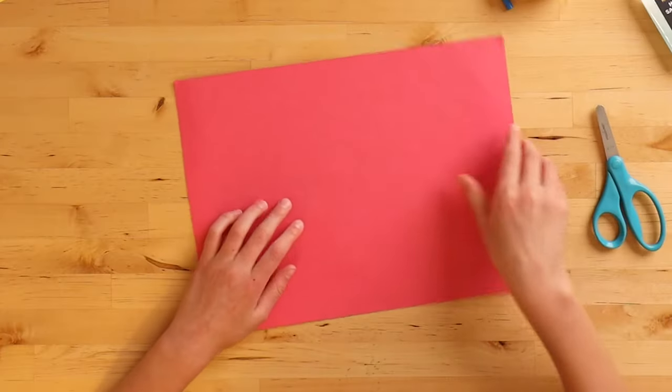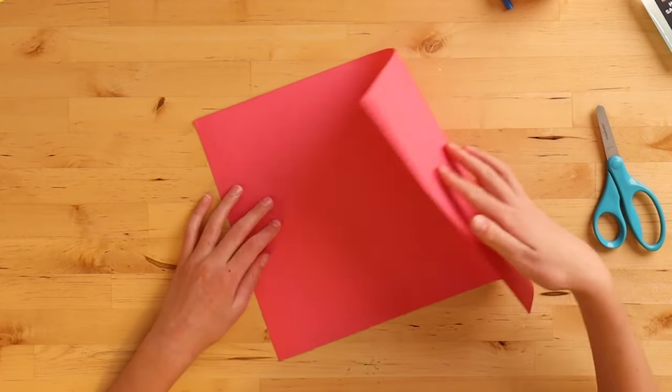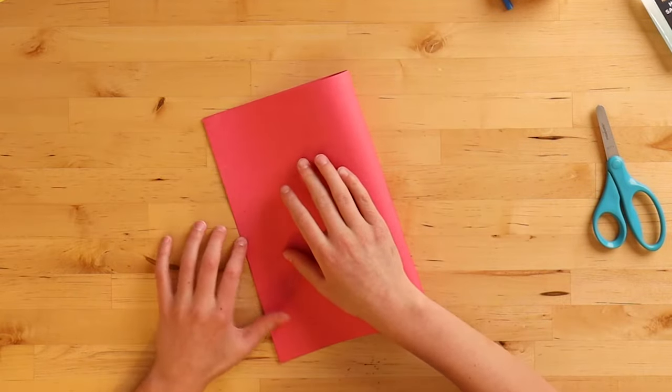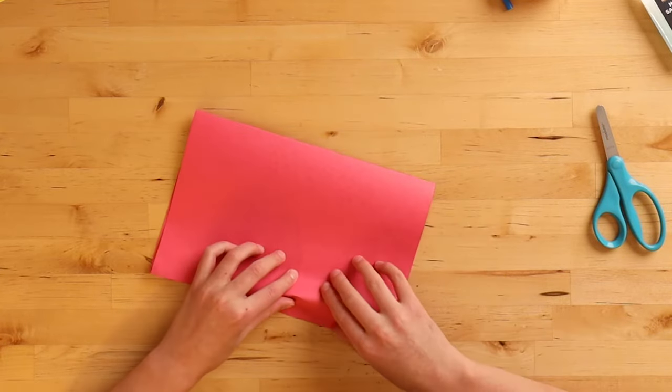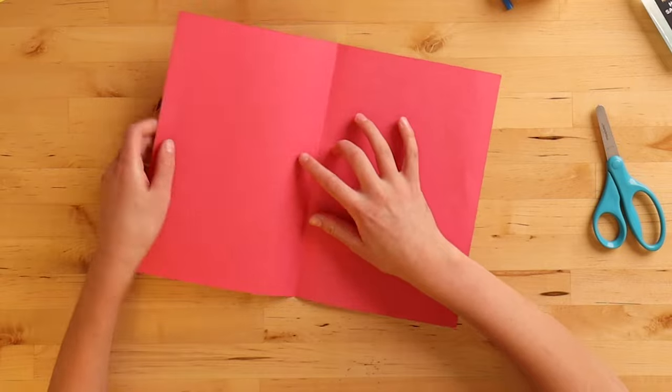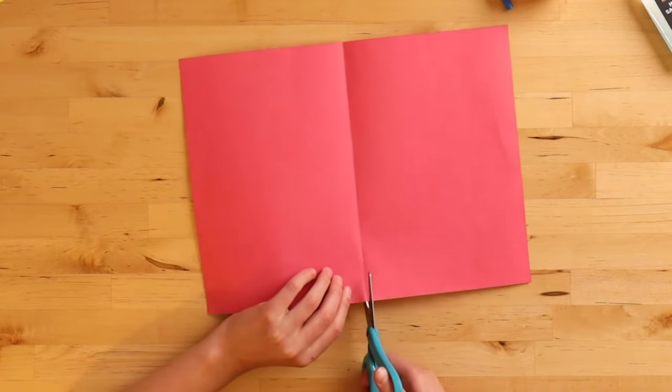This piece of paper is too big, so we're going to cut it in half. We're going to fold it like this in half and make a crease. We're going to unfold this piece of paper and cut it on that crease.